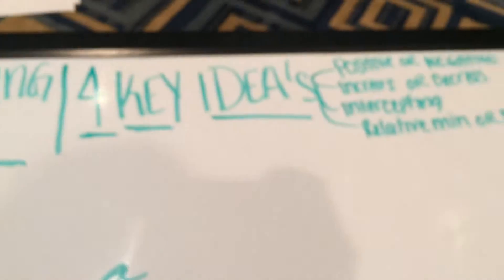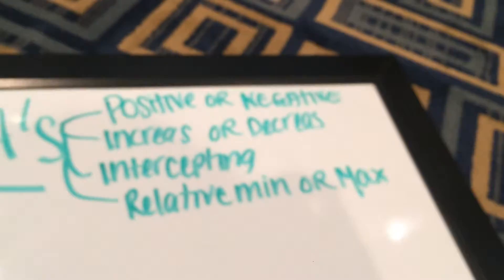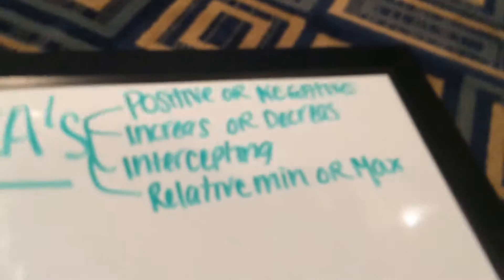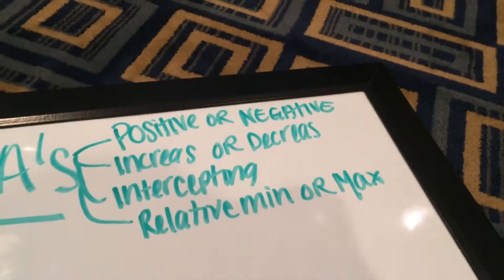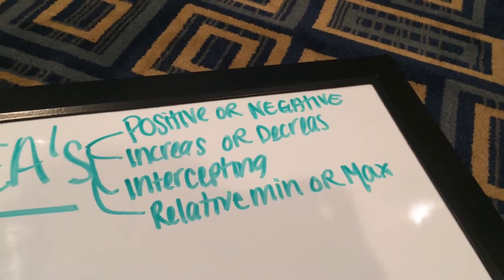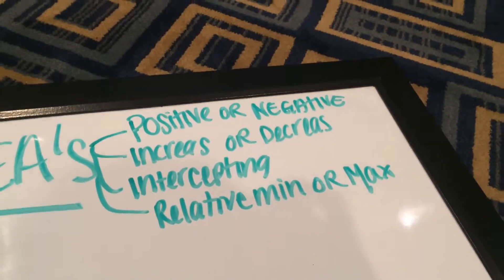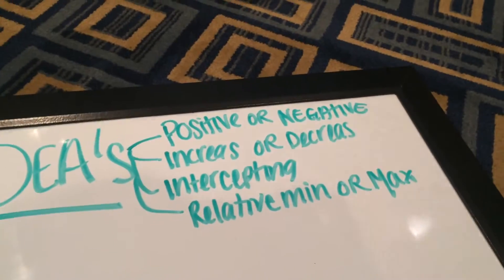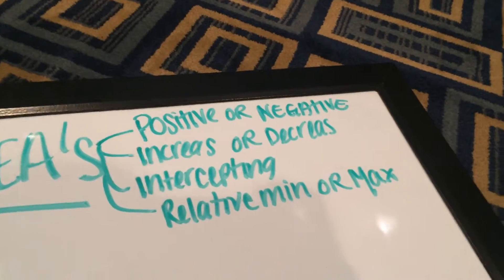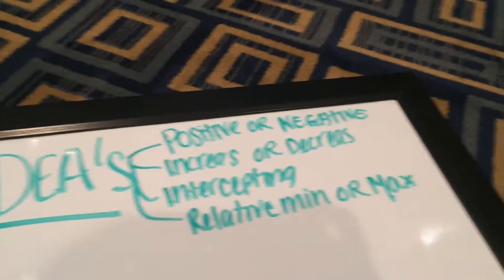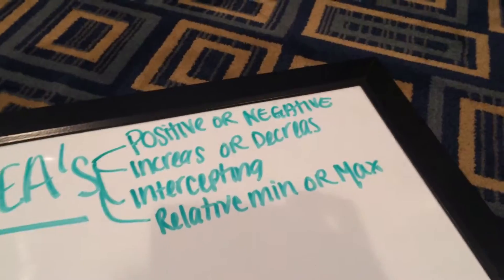Now, here we go. Yeah, I'm watching Parenthood. I'm obsessed. So, interpreting graphs, there are four main ideas, four things that we always need to look for. If our graph is positive or negative, if it's increasing or decreasing, if there's any interceptions, and if there's a relative minimum or maximum.